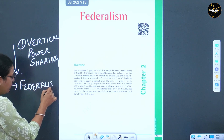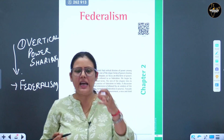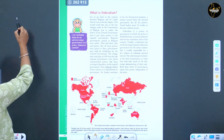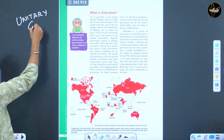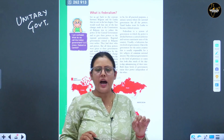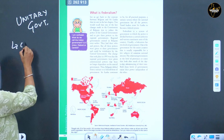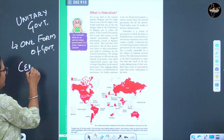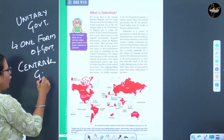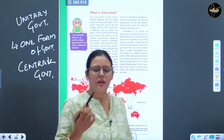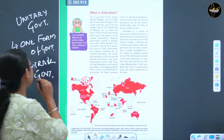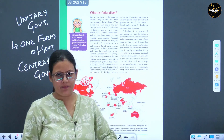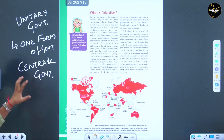Today in this chapter we will study federalism in detail - what it is, how it is achieved, and what its main features are. But before federalism, we need to understand what unitary government is. In a unitary government, there is only one form of government, which is the central government. Even if state governments exist, they are subordinates of the central government - the central government can direct, order, create, or dissolve them.